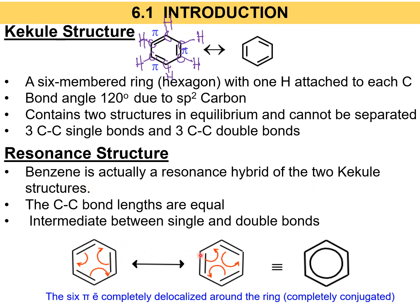These are the two Kekulé structures acting as resonance structures. When showing resonance, you take one Kekulé structure where the double bonds are in certain positions, and in the resonance form the double bonds shift their positions — a double bond here moves to there, and so on. This is the resonance structure. You should only refer to these two structures as the resonance pair.